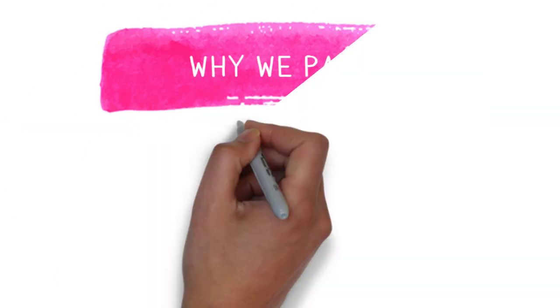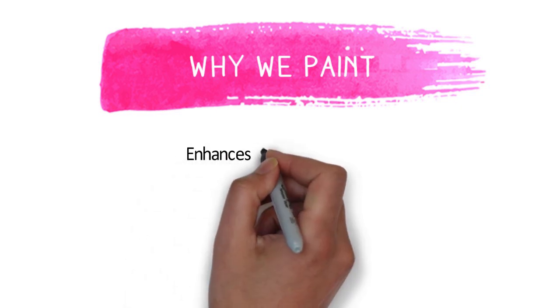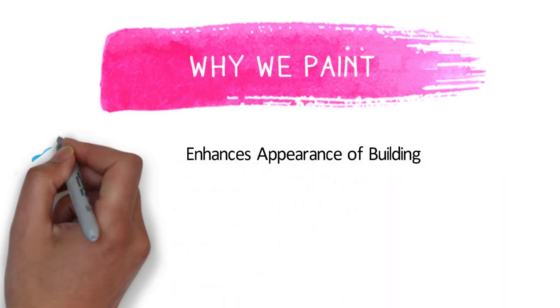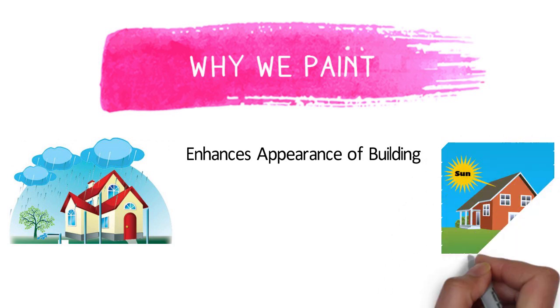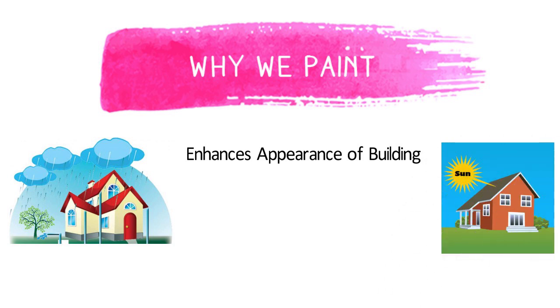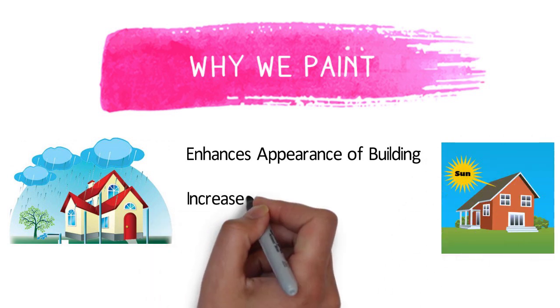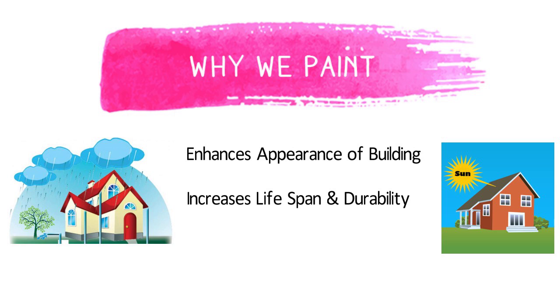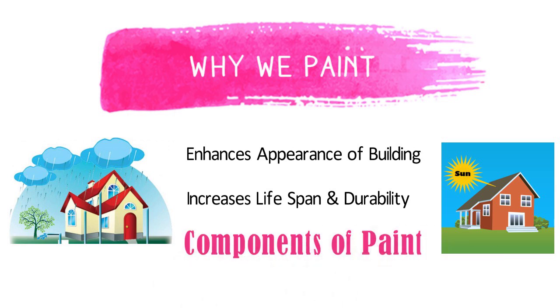Hello friends. Why do we paint our house or building? The reasons are: paint enhances the appearance of a building, paint protects the surface from rain and sunlight, and paint also increases the lifespan and durability of the structure. In this video, we are going to discuss different components of paint.